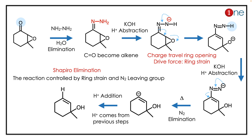The charge travels, then the oxygen is expelled — you have an alcohol. Then nitrogen is a good leaving group, it leaves. Finally you have an alkenyl, and then with H+ addition you have the final product. The concept to learn here is sulfur elimination: sulfur elimination converts the halide into an alkene.